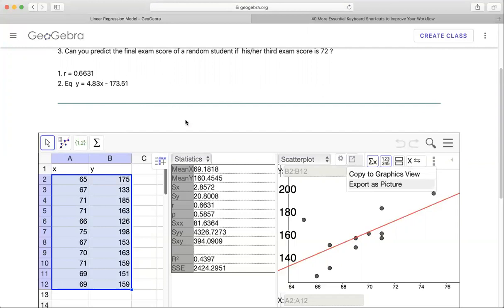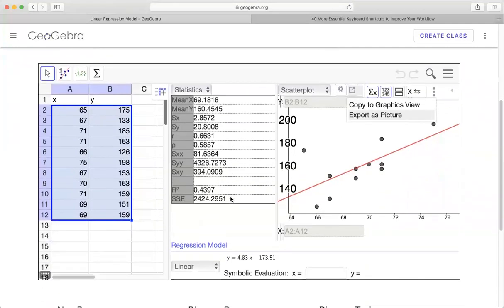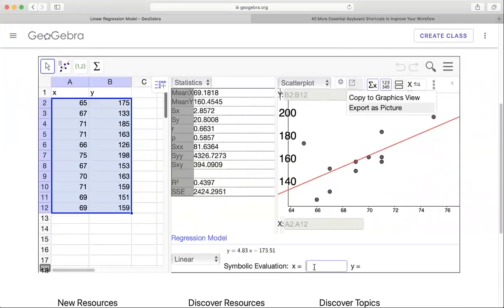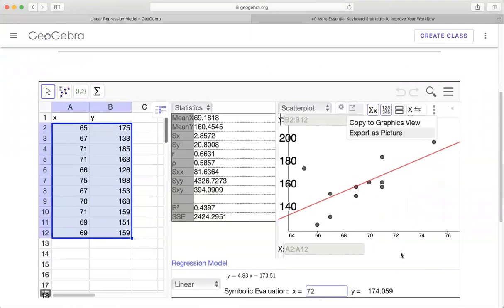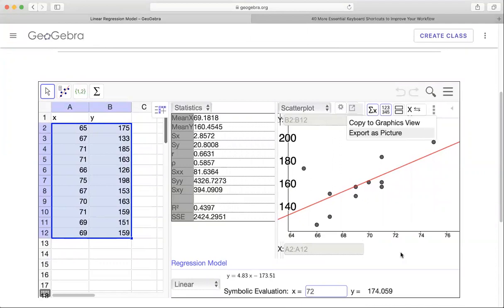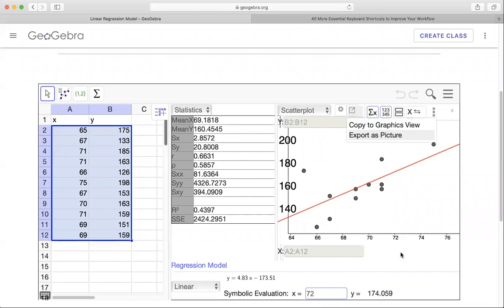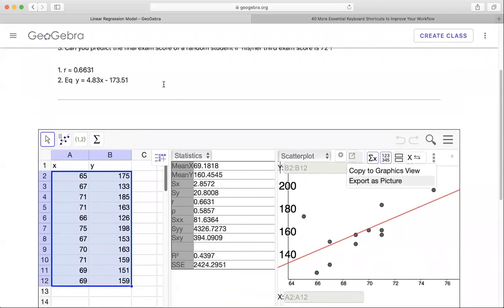So therefore, for number three, in order to do that, all you have to do here is you put the value of the third exam, which is x. So that would be 72. You enter in here and they compute it for you. So you can answer, his or her final exam score would be 174.059. If you round it, it's going to be around 174. So that's how you do it right there.